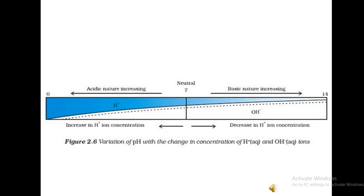Here in this diagram, you can observe the variation of pH with the change in concentration of H plus and OH minus ions. When we move from zero to 14, observe the H plus ion concentration. At zero, the H plus ion concentration is more. When we move on towards 14, the H plus ion concentration decreases and OH minus ion concentration increases.